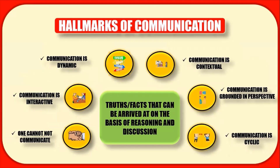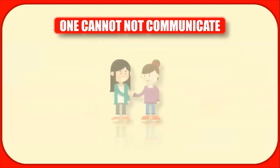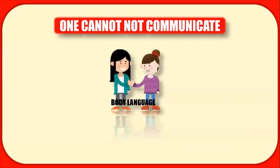The first hallmark is that one cannot not communicate. Usually we believe that communication begins when we use words, but even before we start using words we communicate with the help of body language. Body language means body movements which can comprise hand movements, facial expressions, gestures, eye movements, the clothes that we wear, our hairstyle, and even our skin colour.